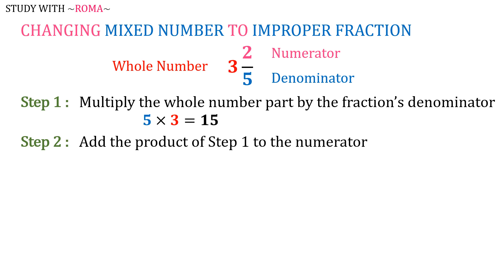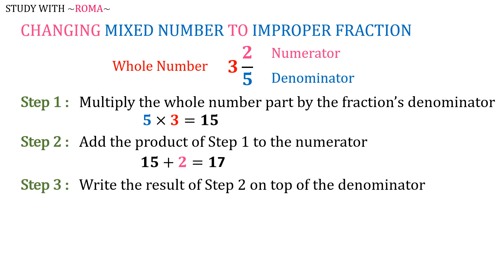Step 2: add the product of step 1 to the numerator. 15 plus 2 equals 17. And step 3: write the result of step 2 on top of the denominator. So our improper fraction is 17 over 5.